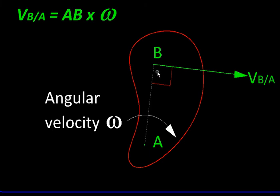This result helps us locate the velocity image of one point relative to velocity image of another point in the same rigid body.